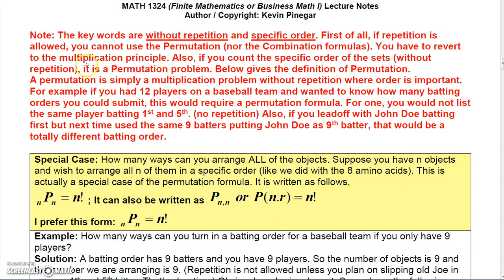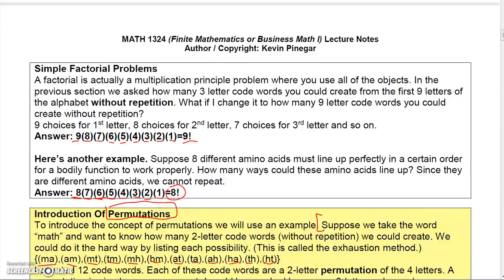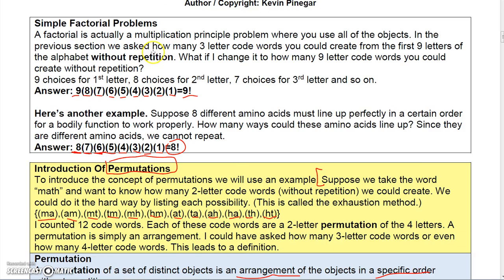The keywords 'without repetition' and 'specific order' are important for permutations. For the permutation formula, the special case is when you want to arrange all of your objects: if you have n objects and want to know how many ways to arrange all n of them, that's always n factorial. Going back to the nine letters making a nine-letter word — that's nine factorial.